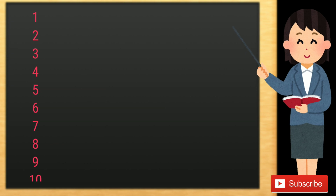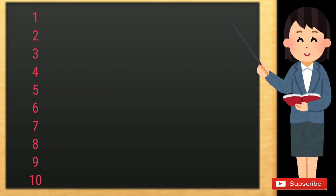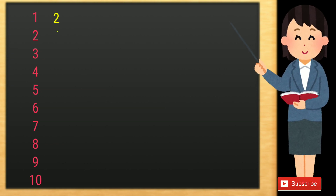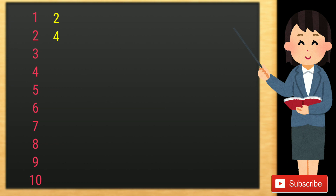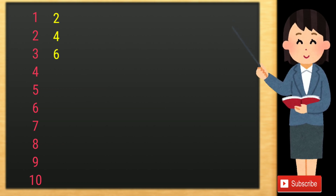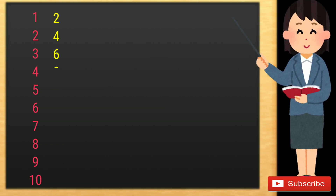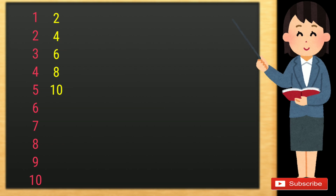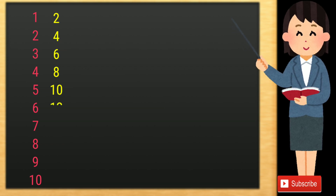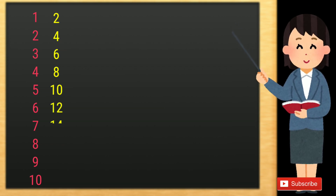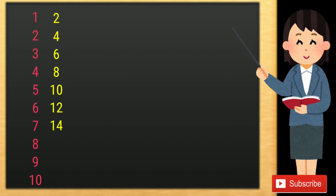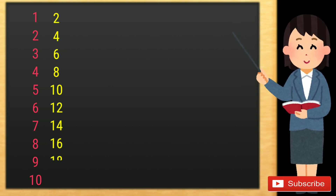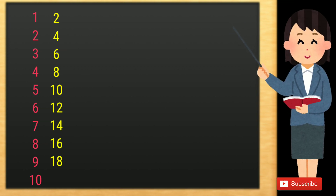1 10s are 10. 2 1s are 2, 2 2s are 4, 2 3s are 6, 2 4s are 8, 2 5s are 10, 2 6s are 12, 2 7s are 14, 2 8s are 16, 2 9s are 18.